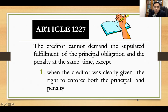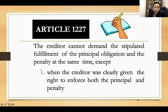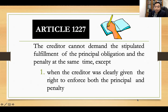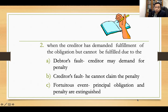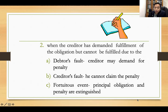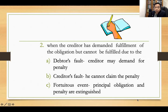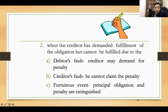Under Article 1227, the creditor cannot demand the stipulated fulfillment of the principal obligation and the penalty at the same time, except when the creditor was clearly given the right to enforce both the principal and the penalty, or when the creditor has demanded fulfillment of the obligation but it cannot be fulfilled due to the debtor's fault — where the creditor may demand the penalty — or through a fortuitous event, in which case both the principal obligation and the penalty are extinguished.